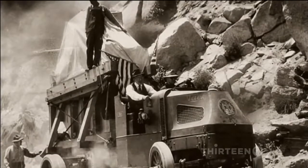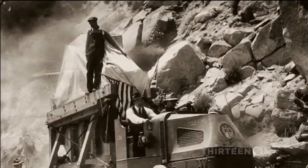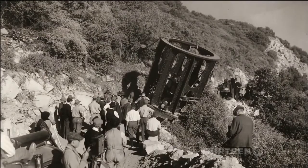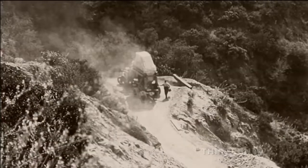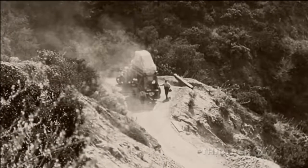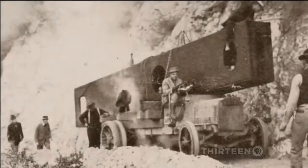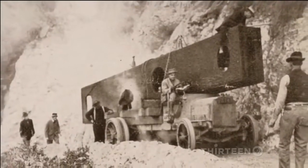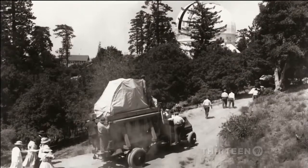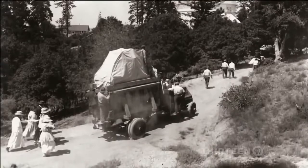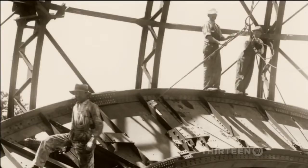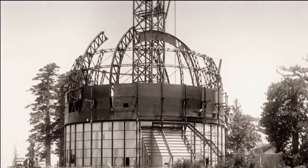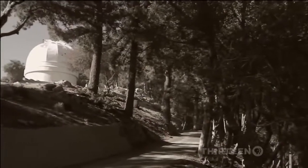One hundred years ago, the simple idea of putting an observatory on top of a mountain is revolutionary and an enormous logistical challenge. Hundreds of tons of steel and concrete have to be carefully hauled up the narrow mountain roads. But the clear skies are worth it. Mount Wilson will become the highest observatory on Earth and a blueprint for observatories all over the world.